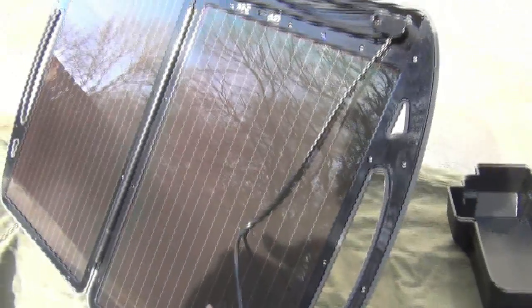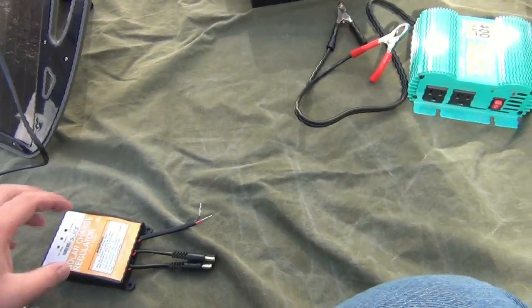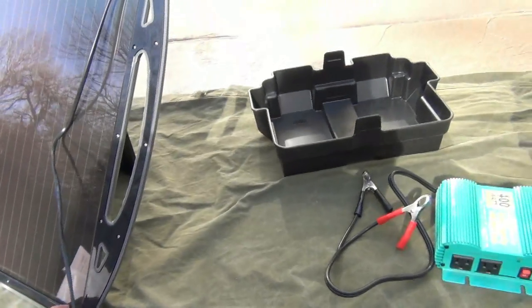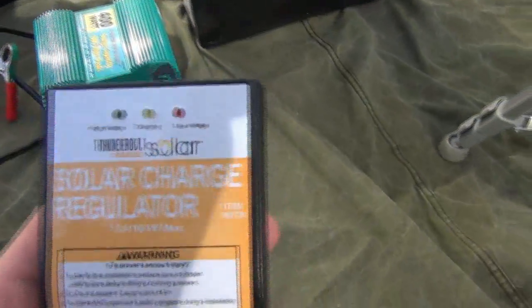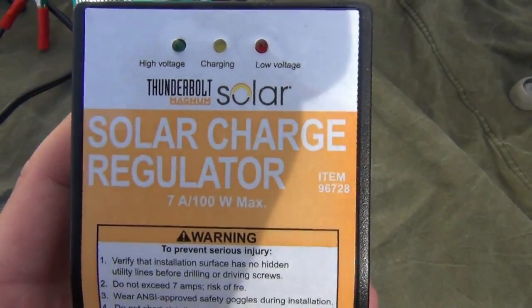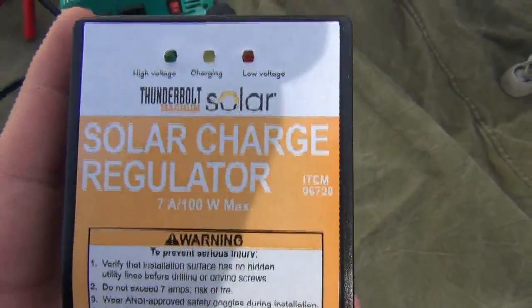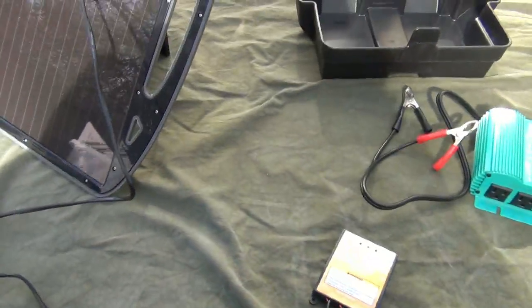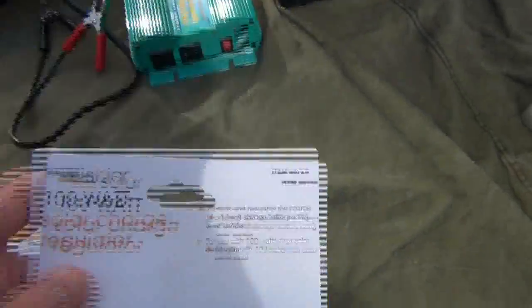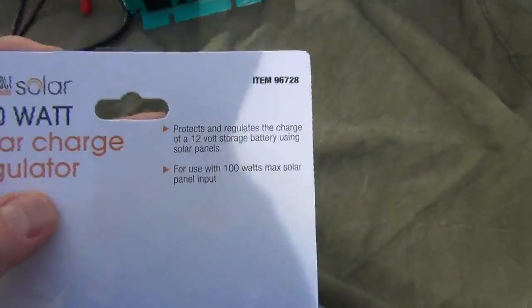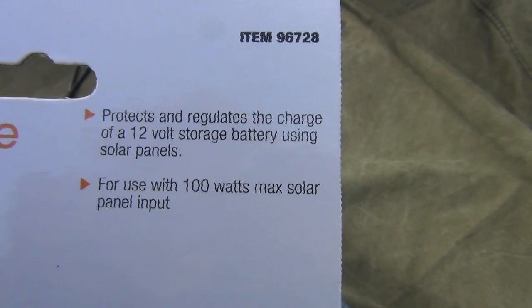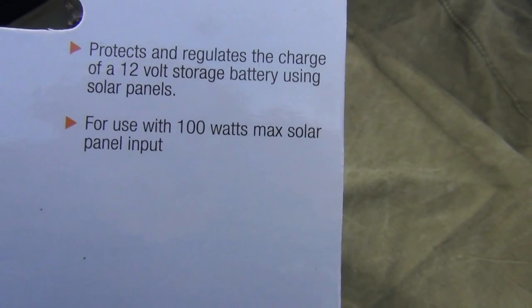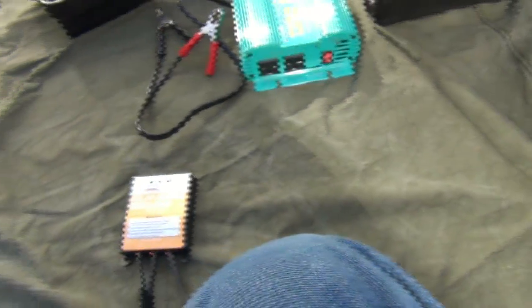To charge your 12 volt battery with the solar panel, I did some research online and a lot of guys say you're going to need a solar charge regulator. Here it is. Here's the package. I kept the package because it has instructions on it and it's a good reference. It's a 100 watt solar charge regulator. It protects and regulates the charge of a 12 volt storage battery using solar panels, for use with 100 watts max solar panel input.